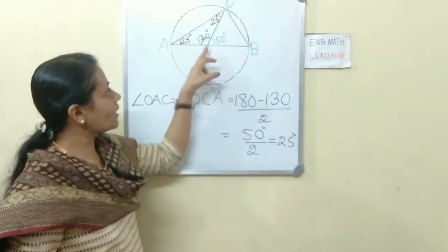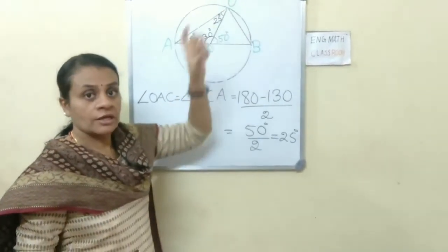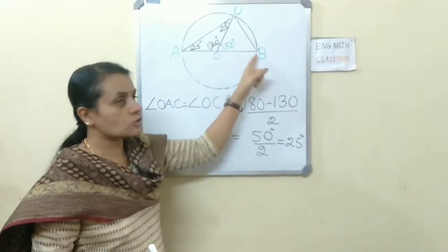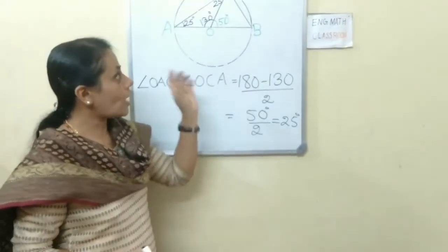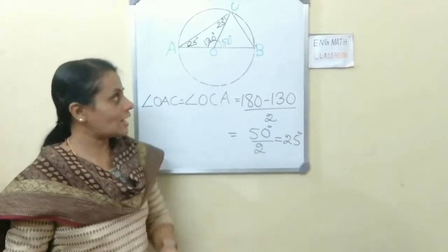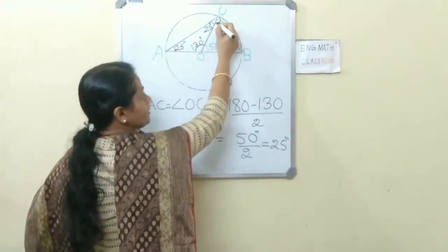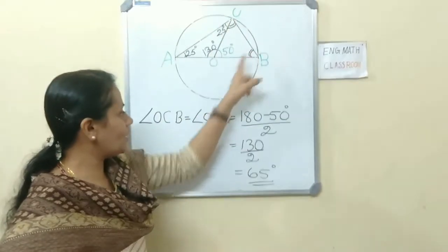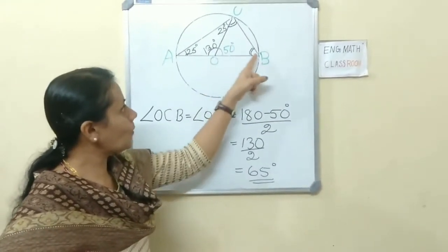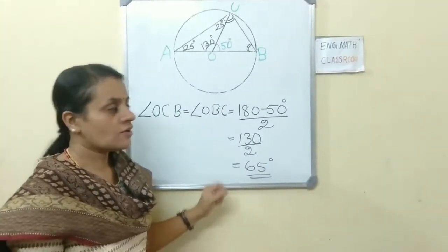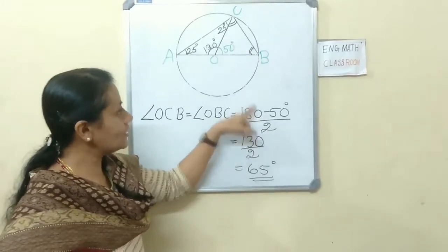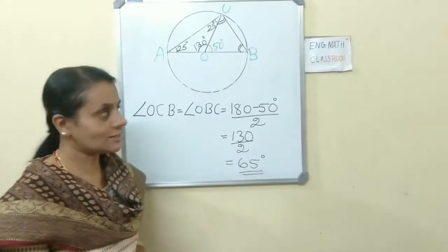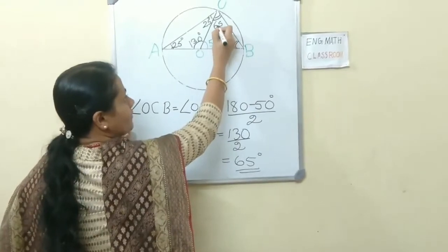Now look at triangle BOC. Here also, OC and OB are radii and they are equal, so this triangle is also an isosceles triangle. Angles opposite equal sides are equal, so angle OCB equals angle OBC. To find these two angles: (180 minus 50) divided by 2 equals 130 divided by 2 equals 65 degrees. So each angle is 65 degrees.